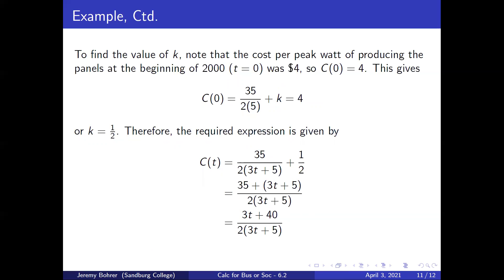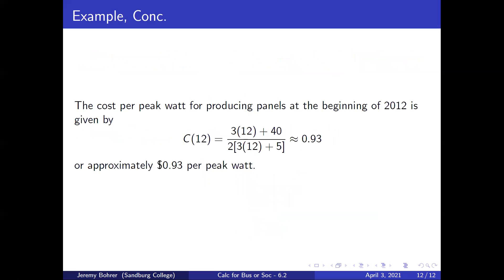To find the value of k, note that the cost per peak watt at the beginning of 2000, t equals 0, was $4. So c of 0 equals 4. This gives us 35 over 2 times 5 plus k equals 4, or k equals one-half. Therefore, the required expression is c of t equals 35 over 2 times 3t plus 5 plus one-half, which simplifies to 3t plus 40 over 2 times 3t plus 5. The cost at the beginning of 2012 is c of 12 equals 3 times 12 plus 40 over 2 times 3 times 12 plus 5, which is approximately $0.93, or about 93 cents per peak watt.